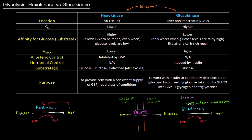Let's start with location. Hexokinase is located in all tissues, whereas glucokinase is found in the liver and in pancreatic beta cells. That's actually important to its function and purpose, which we'll get to shortly.